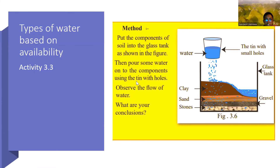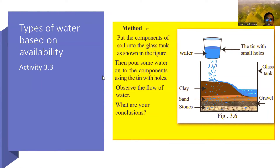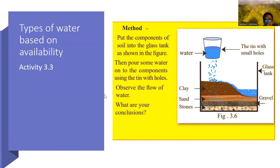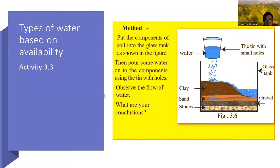Types of water based on availability — Activity three: Method — put the components of soil into a glass tank as shown in the figure, then pour some water on the components using a tin with a hole. Observe the flow of water and write the conclusions.